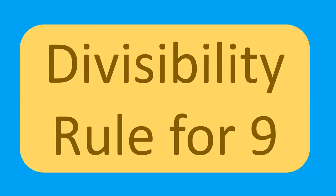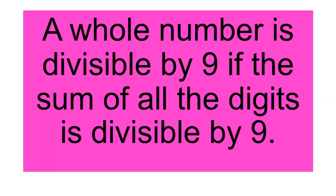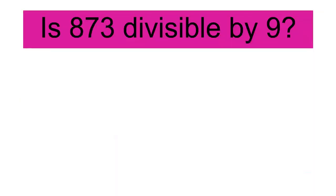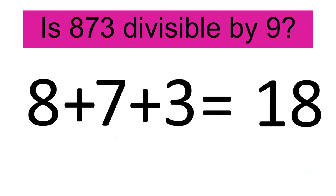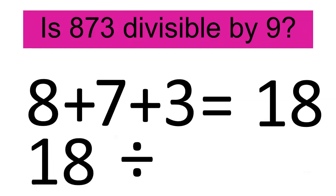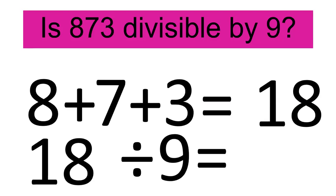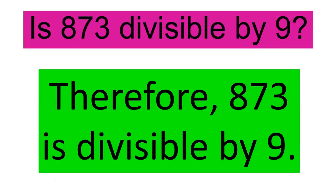Divisibility rule for 9: A whole number is divisible by 9 if the sum of all the digits is divisible by 9. Example: Is 873 divisible by 9? Add the digits: 8 plus 7 plus 3 equals 18. Then, 18 divided by 9 equals 2. Therefore, 873 is divisible by 9.